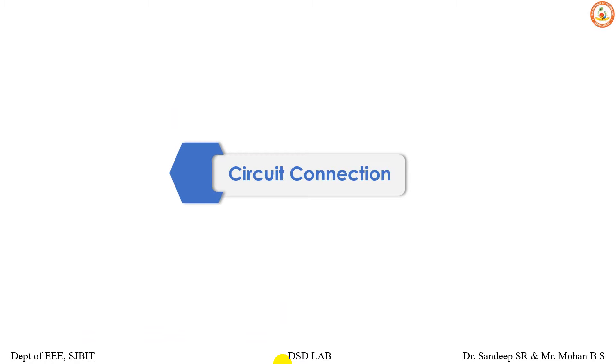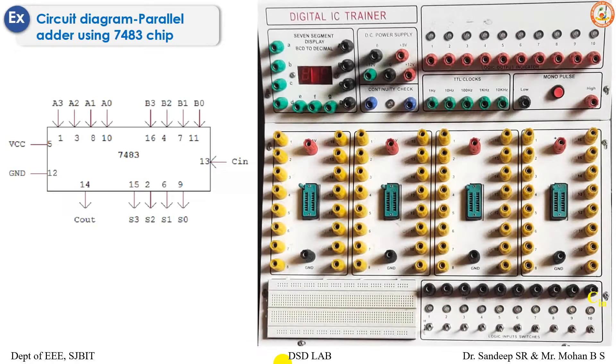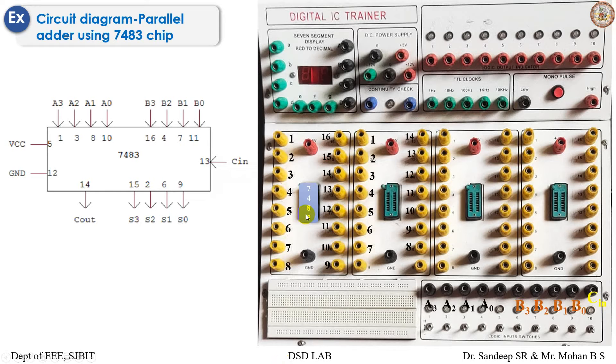The circuit connection for the 16-pin IC 7483 has two four-bit inputs, A3 to A0 and B3 to B0. C_in has to be set low here. C_out has been indicated above. The four-bit outputs are S3, S2, S1, and S0.